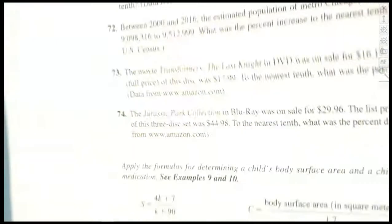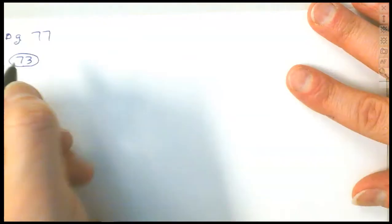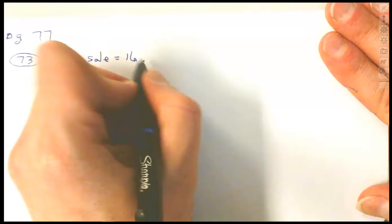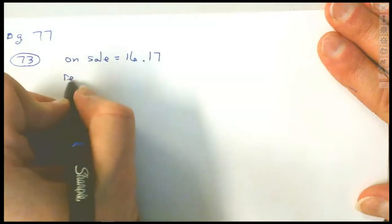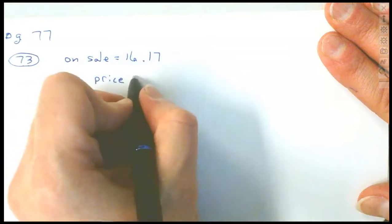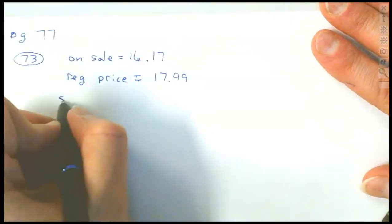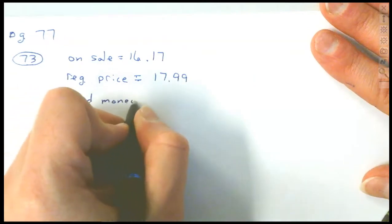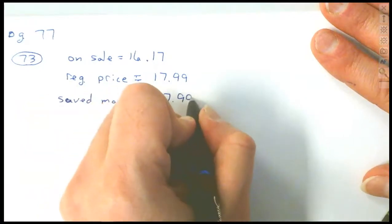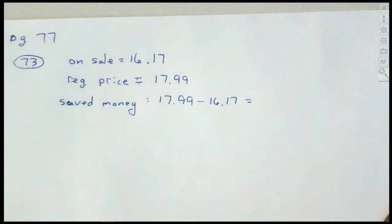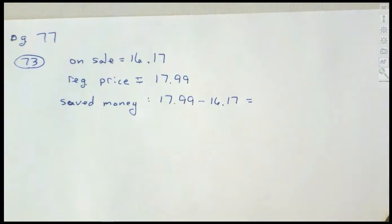We want to find that discount percentage rate. The DVD was on sale for $16.17, and the regular price is $17.99. How much money did we save? We take $17.99 and subtract $16.17, which gives us a difference of $1.82. So we saved $1.82.